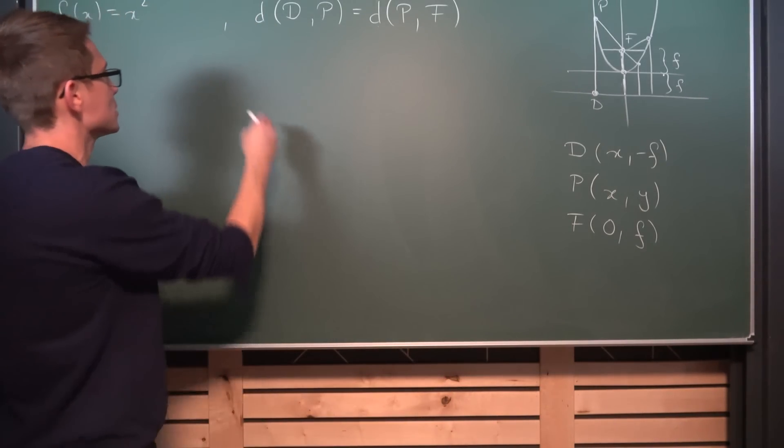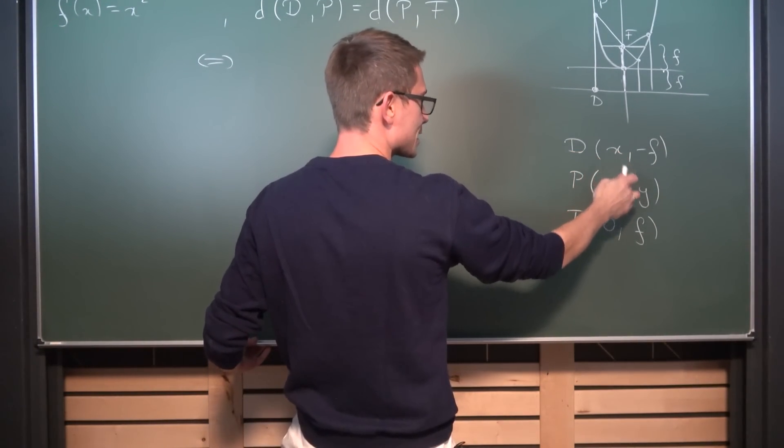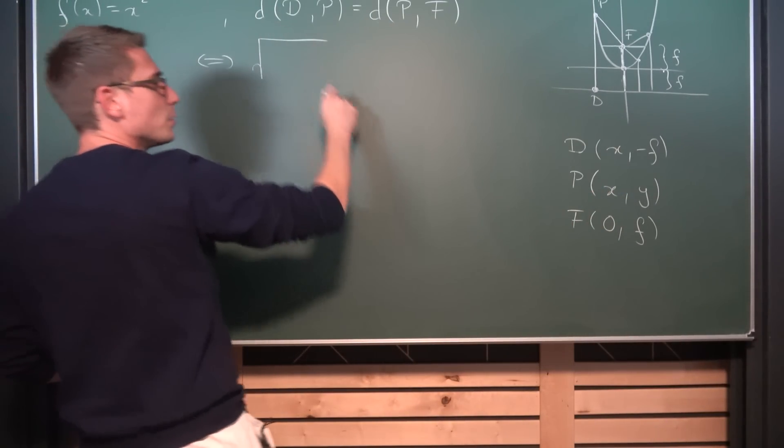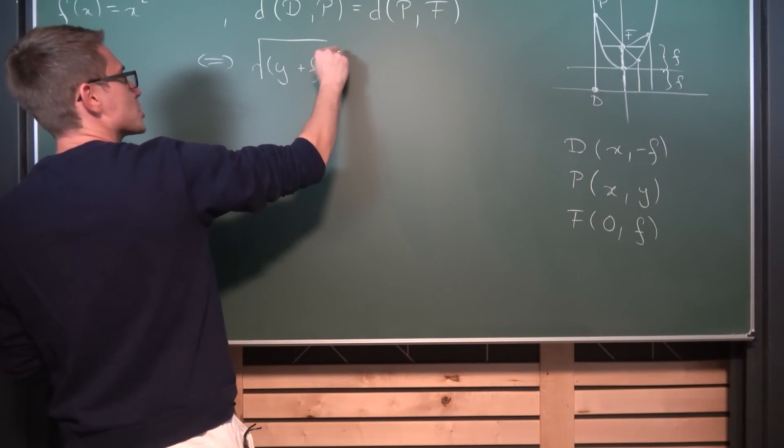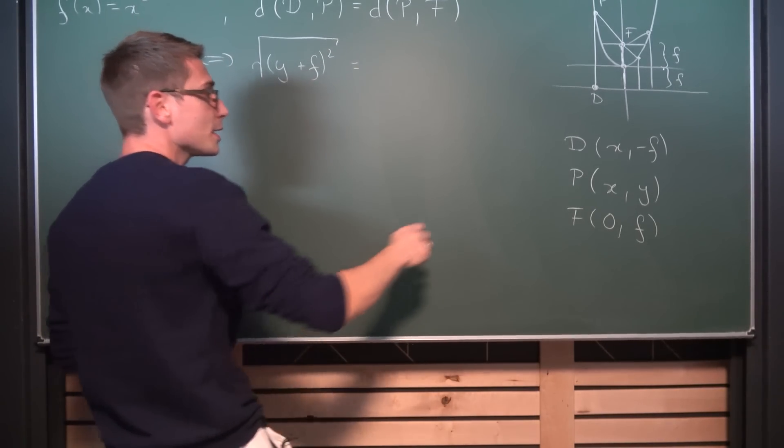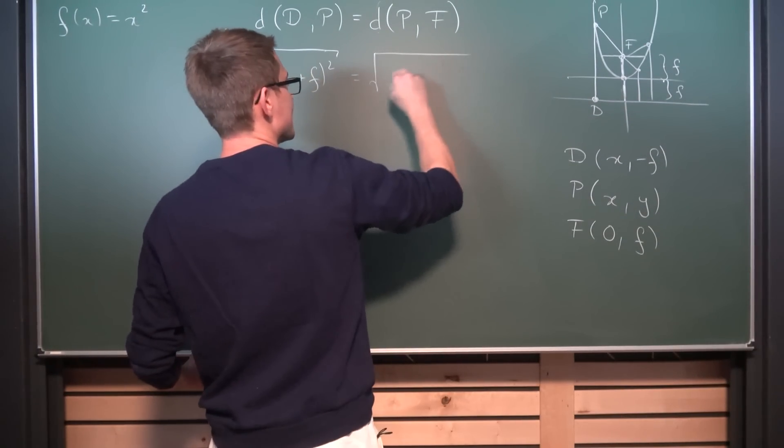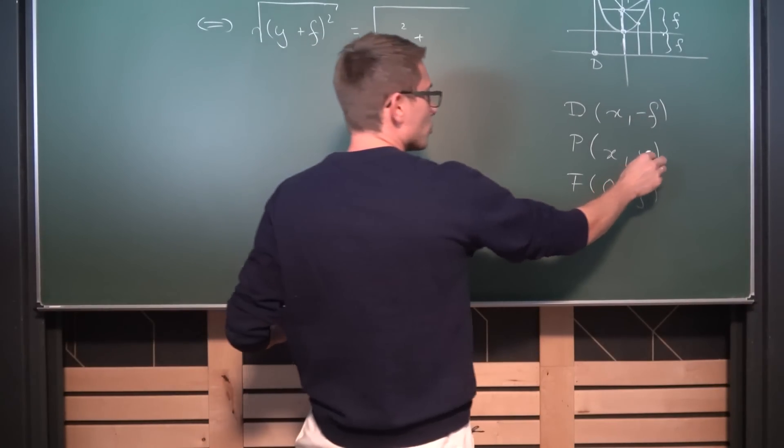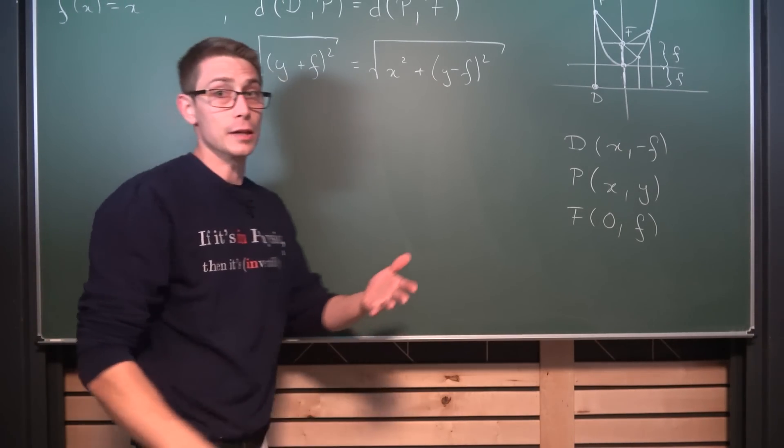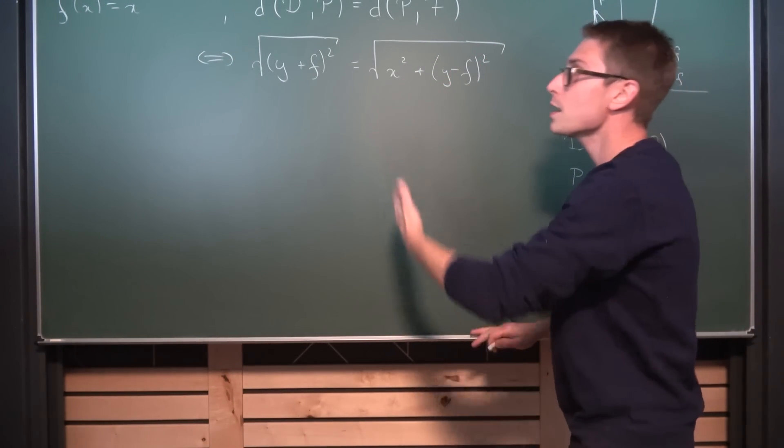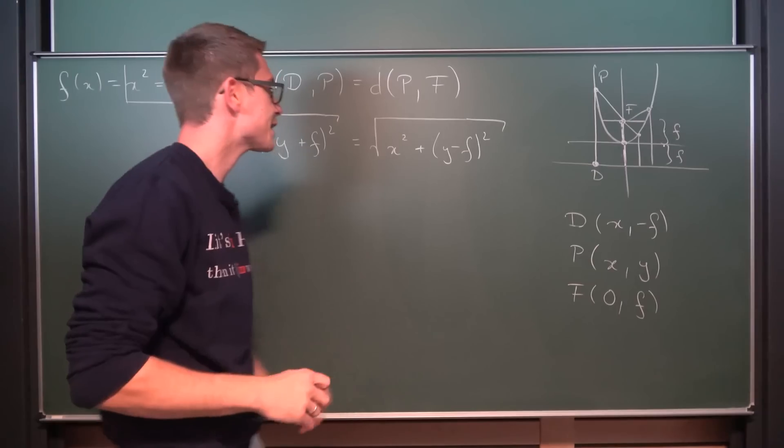And now we can go ahead and put all of this into our distance formulas which are defined by Pythagoras. So the distance from D to P is going to be x minus x, which is zero, so the square root of y minus minus, so y plus f, but squared. And this must be equal, for it to be a parabola, to the square root of x minus zero squared, so this is just x squared, and then plus y minus f squared. And this basically already settles the deal. Now we just need to solve this for y to get ourselves a parabola out, because our parabola has the form, at least our parent function, y being equal to x squared.